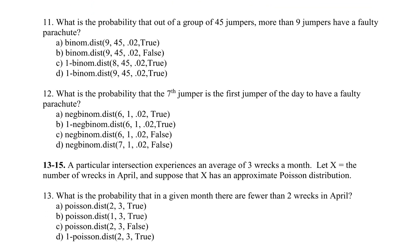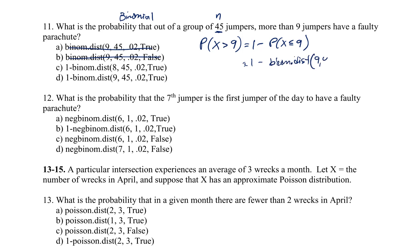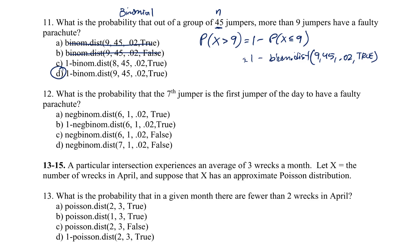Question 11: out of 45 jumpers, what's the probability more than 9 have a faulty parachute? Again it's binomial with a fixed number of trials. Writing as a math statement: X > 9. Since Excel can't do greater than directly, this becomes 1 minus BINOM.DIST(9, 45, 0.02, TRUE), using 'true' for the less-than-or-equal-to complement. The answer is D.